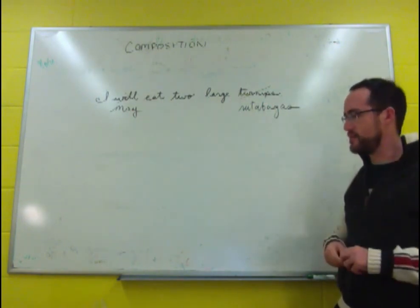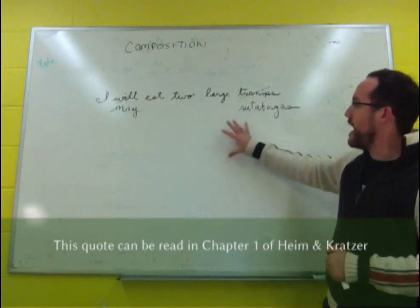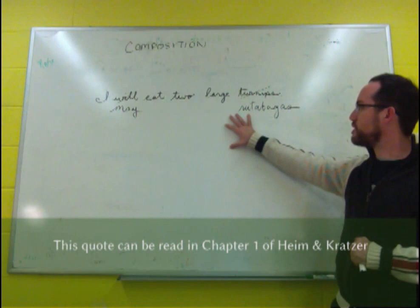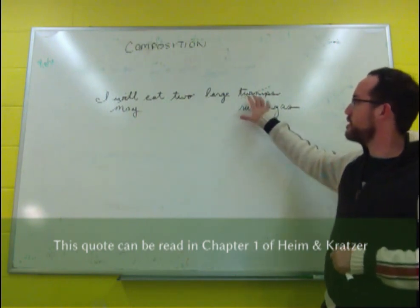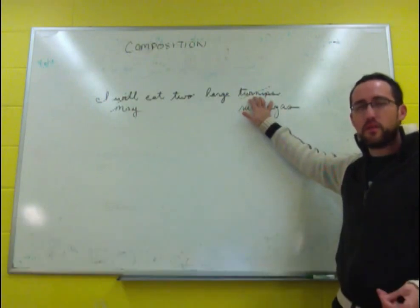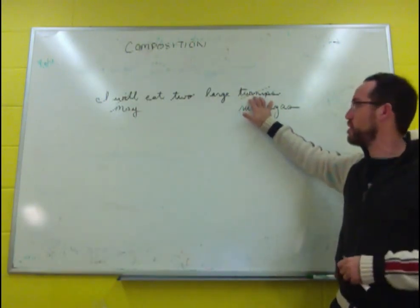And Donald Davidson went into this at length and discussed how this fact is what makes the truth conditions useful. Knowing that a turnip is something that's a turnip doesn't really help us a whole lot when we're trying to understand how the meaning of language works.